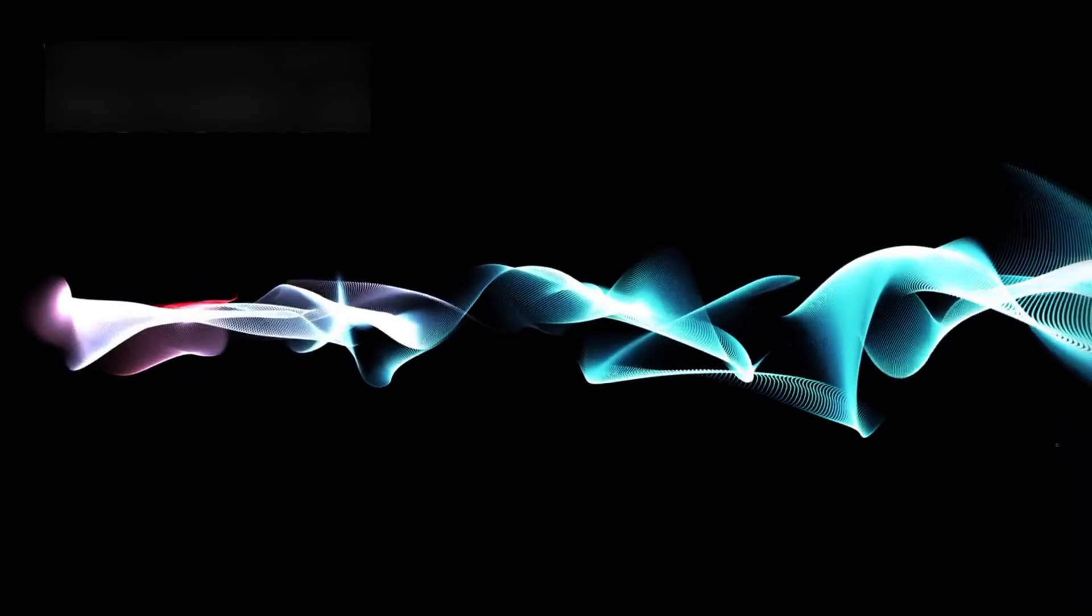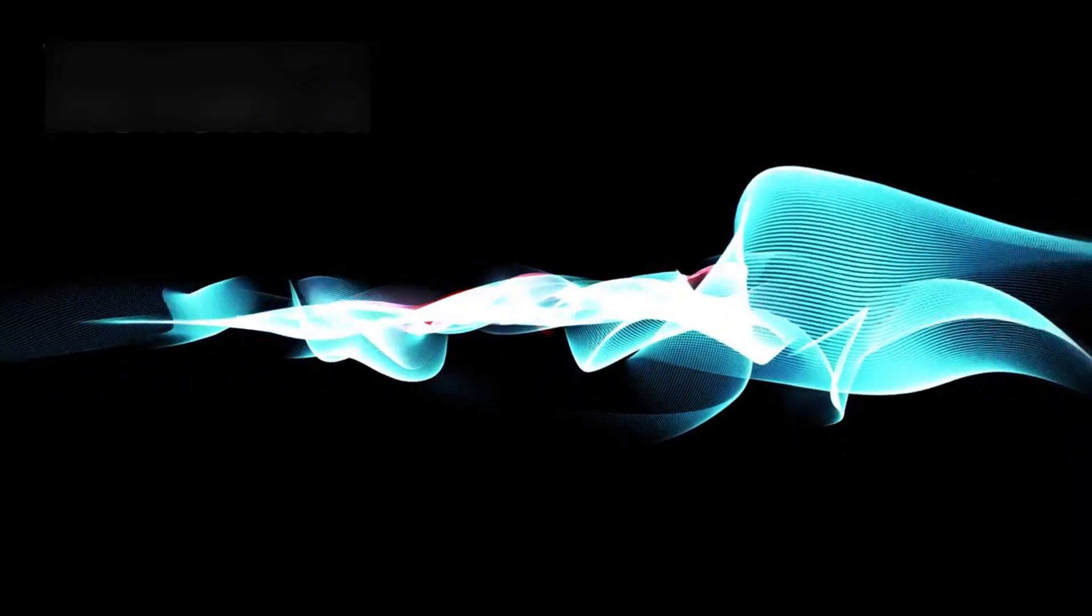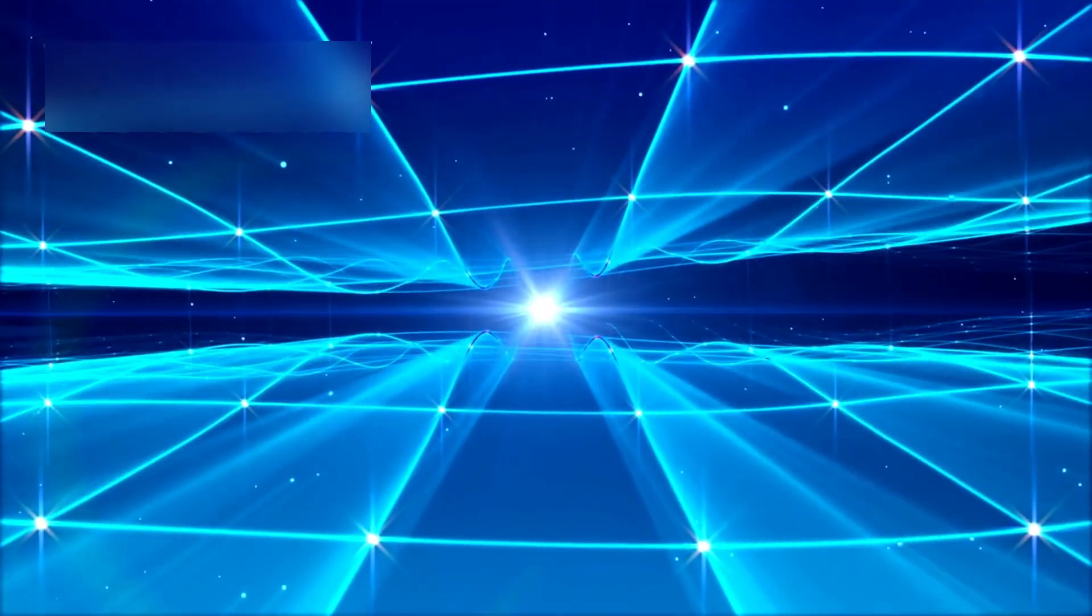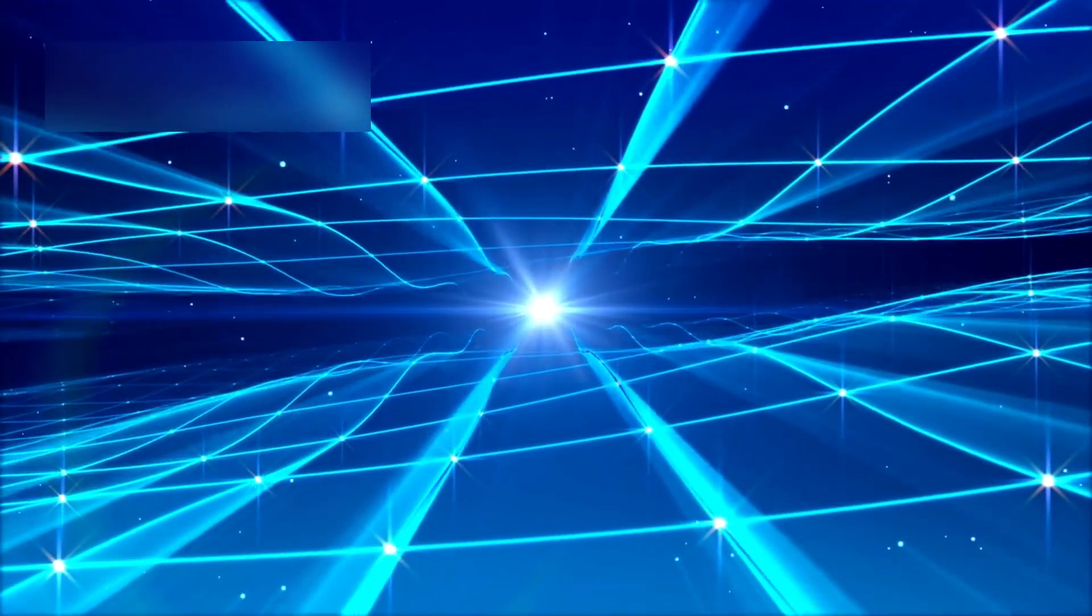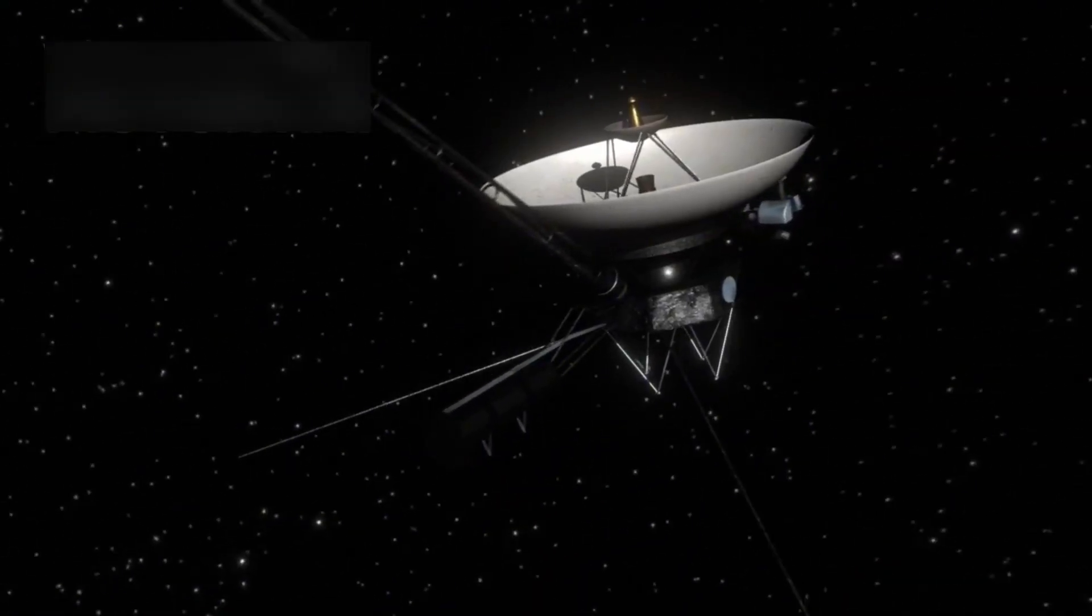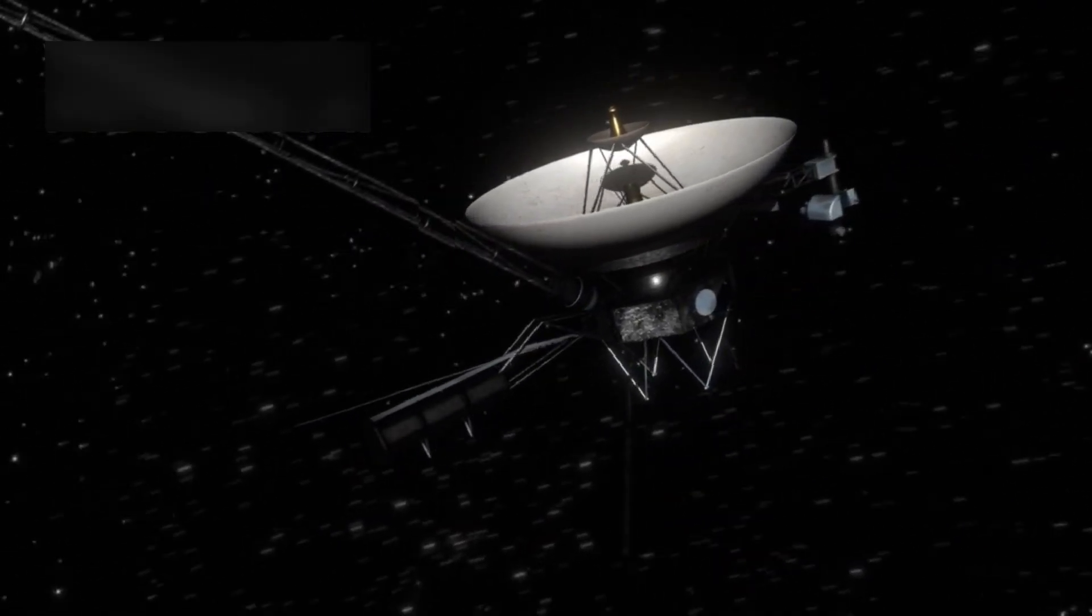The idea of these cosmic currents isn't science fiction anymore. Scientists are now exploring the concept of a galactic energy grid, a network that connects systems across space. Voyager 1 might be giving us the first evidence of such a structure.